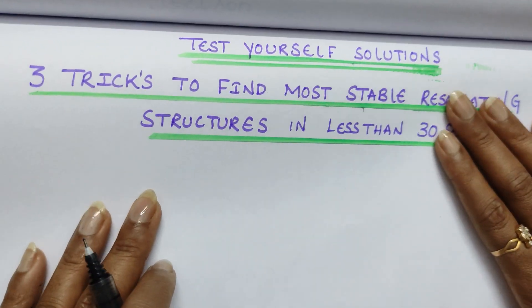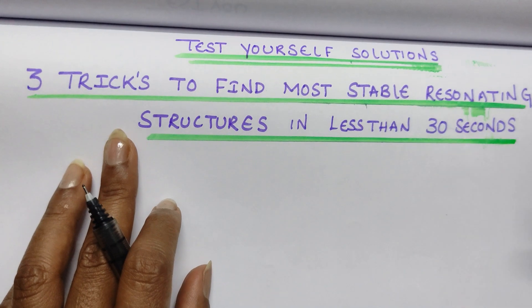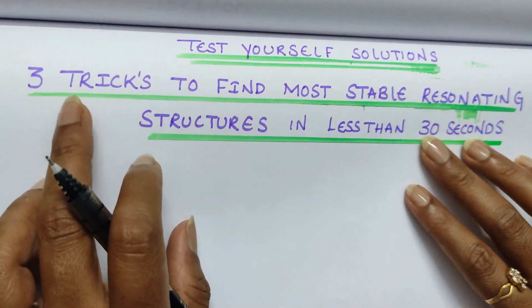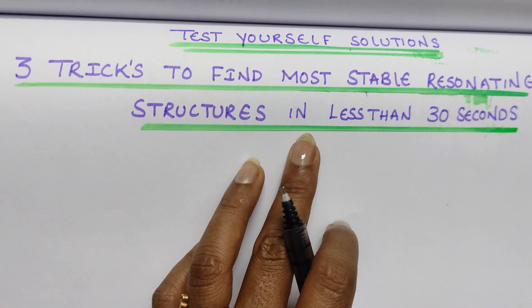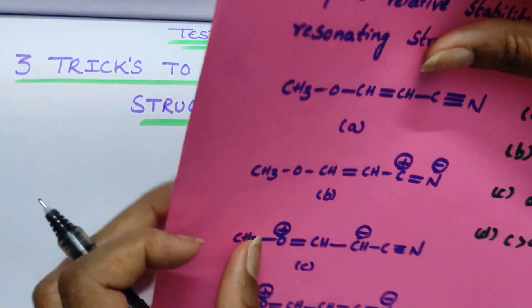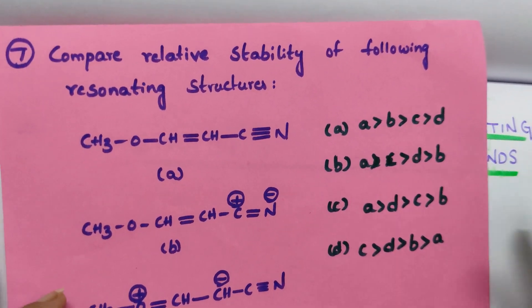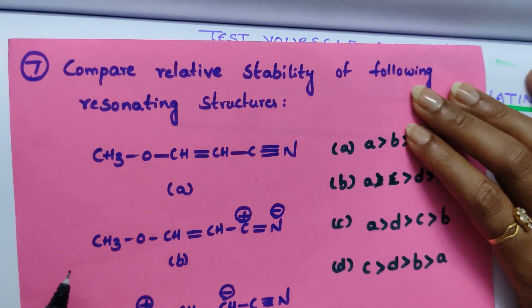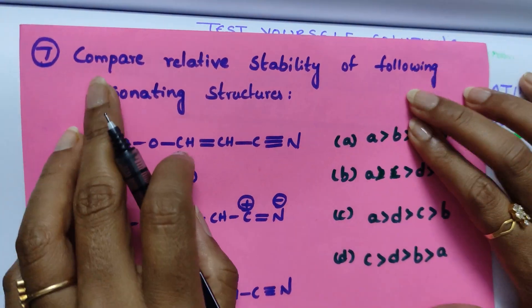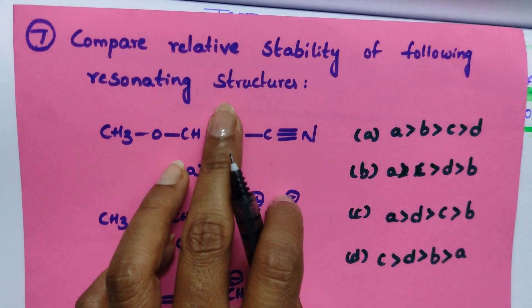Hi students, in this video I am going to give you solutions to the test yourself questions which I asked in a previous video based on three tricks to find more stable resonating structures. By using that trick, you can solve the questions in less than 30 seconds. If you did not see that, watch that video and then attempt this question. Compare the relative stability of the following structures. What do you have to do?